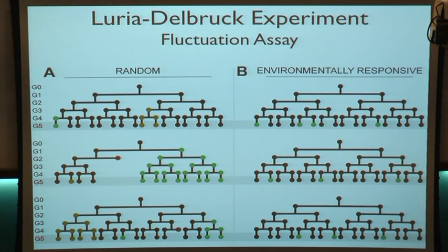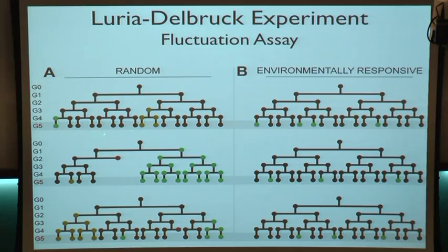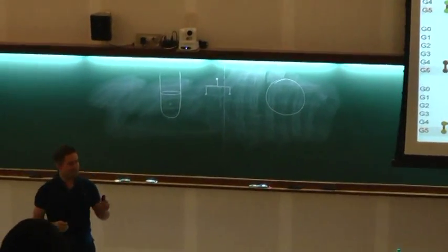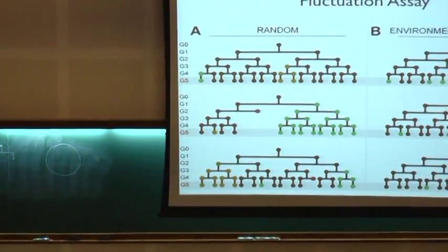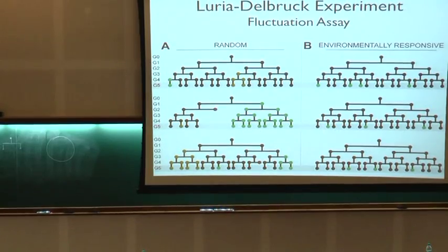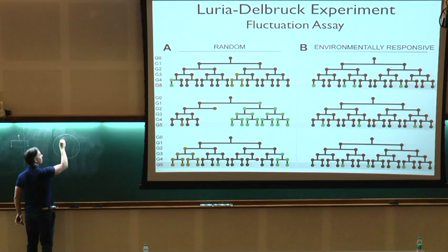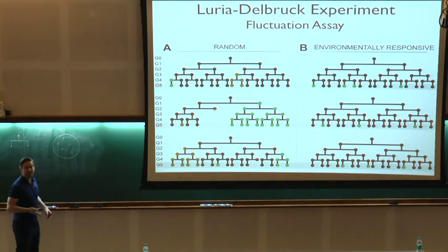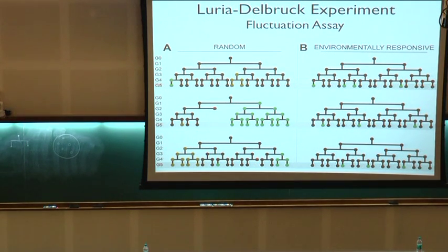What they measure when they do this experiment is they let the cells grow into a big population, then they hit them with the phage — the virus — and let the virus attack the cells. Then they take the cells and plate them on an agar plate. Any cells which have not generated the mutation to make them immune are going to die — they get killed by the virus and can't grow on this plate. Any cells which have undergone this mutation will be able to survive, grow, and form colonies. So you count and see how many immune cells resulted from this exposure to the virus.